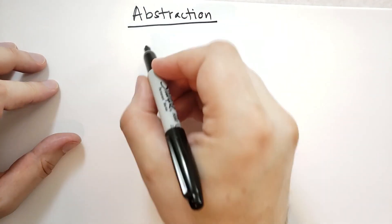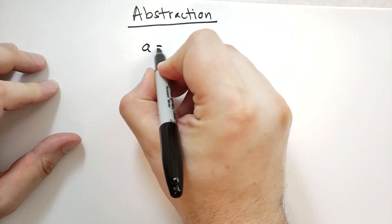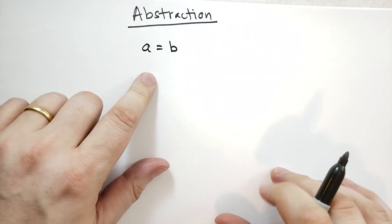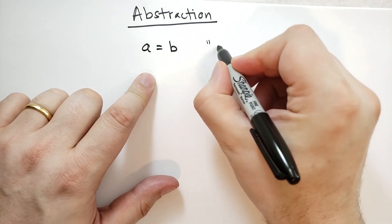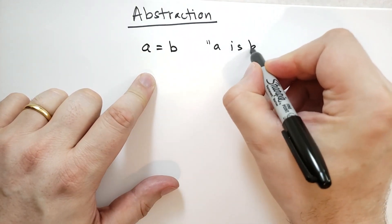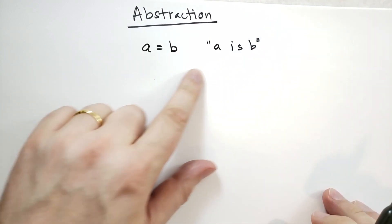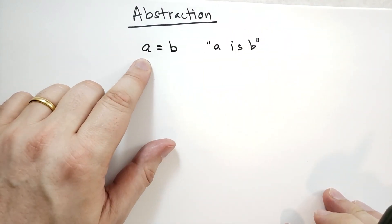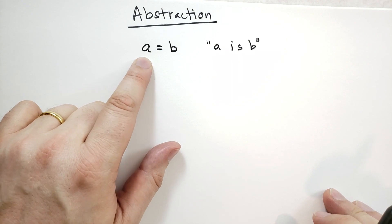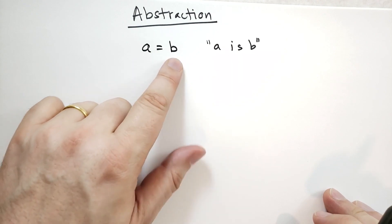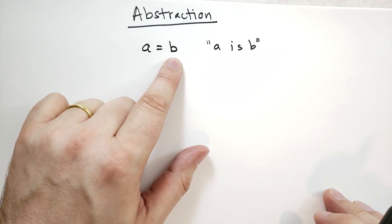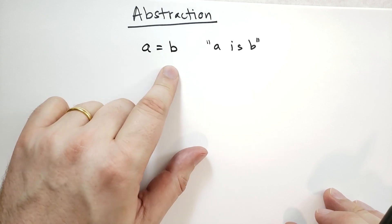So I'm going to introduce some mathematical concepts here to help maybe clear the air a bit about what an abstraction is and why it works. In mathematics, when I say a equals b, basically in English we'd say 'a is b'. What this means is that there's this thing that we call a and there's this thing that we call b, and that thing is actually the same thing.